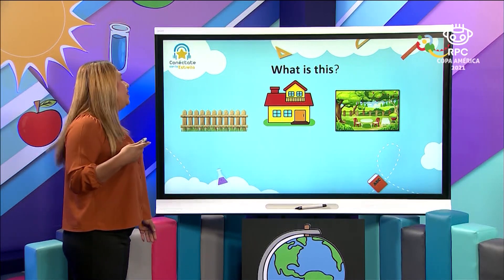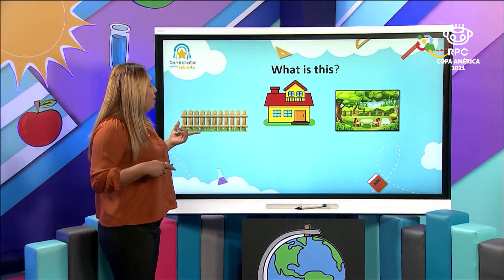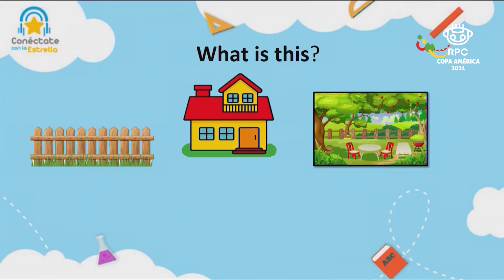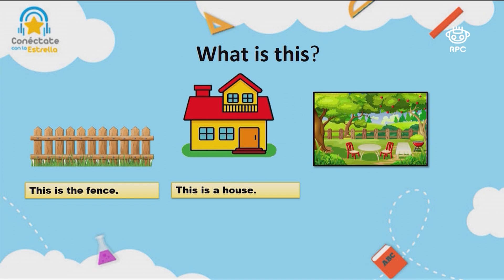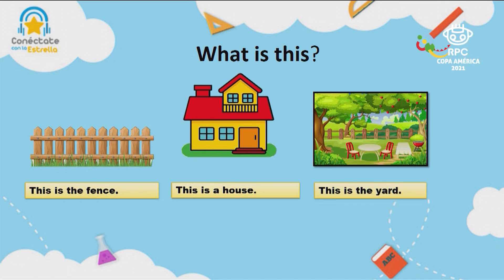Let's continue learning. What is this? It can protect the privacy of your house — this is the fence. And this is a house — we all know this is a house. And then we have a beautiful place where you can enjoy and prepare a picnic with your family — this is the yard. Very good.